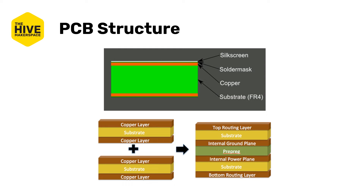Over the external copper is a layer of protective paint called solder mask, which protects the copper from oxidation, physical damage, and electrical impropriety. And finally, over the solder mask, an ink known as silkscreen may be applied to add text or graphics to either surface of the board. Additional internal copper layers may also be built into this stack to create four, eight, or even more layers for additional wiring and heat conduction.